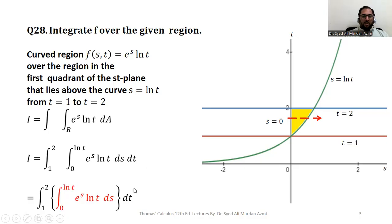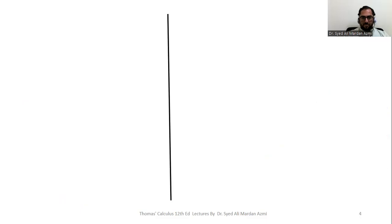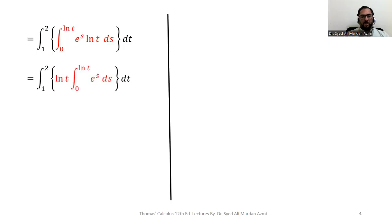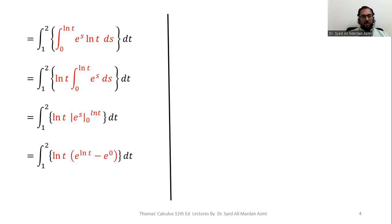We isolate the inner integral from the outer integral using brackets, since we always solve the inner integral first. Integrating with respect to s: ln(t) is constant and is taken outside. The integral of e^s from 0 to ln(t) is evaluated as [e^s] from 0 to ln(t). Applying the Fundamental Theorem of Calculus gives e^(ln(t)) minus e^0.